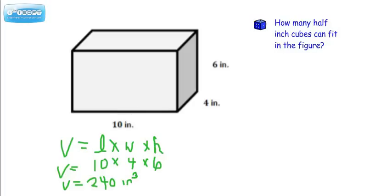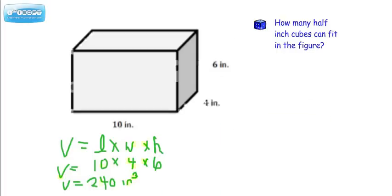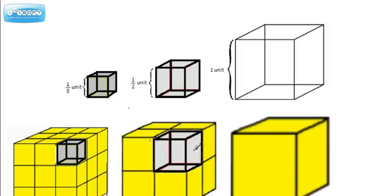Now remember, we said earlier that we can fit 8 of these for every one of these. So if we have 240 of these, doesn't that mean that we would have to multiply that number by 8 to get how many of these would be in the entire figure? And again, just to make sure you understand, that's because 8 of these will fit into one of these.